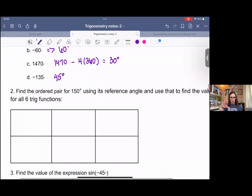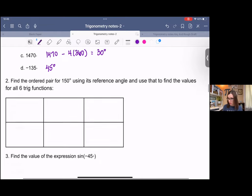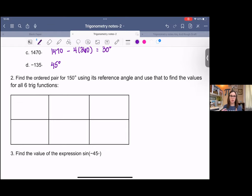So find the ordered pair for 150 degrees using the reference angle and use that point, the ordered pair, to find all six trig functions. I know that the reference angle for 150 degrees is 30 degrees. I also know that the coordinate for 30 degrees is root 3 over 2 comma 1 half.